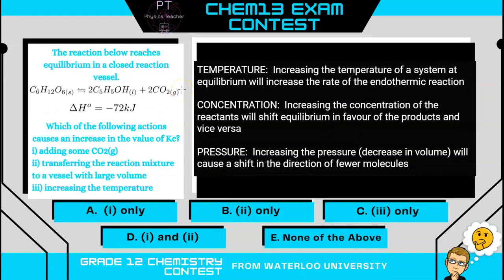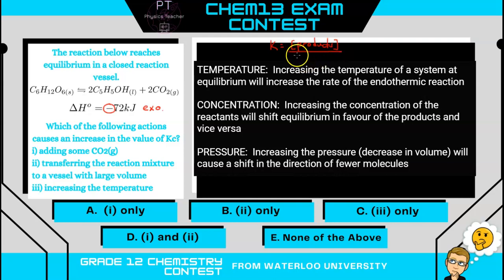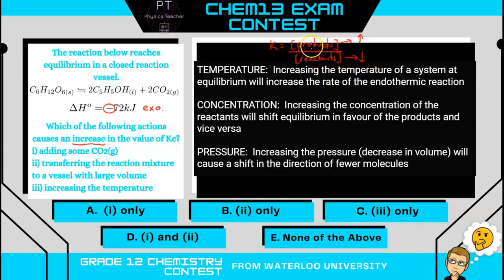In this question, the reaction below reaches equilibrium in a closed reaction vessel and again our enthalpy change is negative, so we have an exothermic reaction. Which of the following actions causes an increase in the value of the equilibrium constant? Our equilibrium constant Kc is equal to the product of the concentrations of the products divided by the product of the concentrations of the reactants. So if we want to increase Kc, we want to increase the products and decrease the reactants — that ratio would be larger. This means we want the reaction to go from left to right. That's a tricky way of asking this question; it doesn't seem like a Le Chatelier's problem at first, but it is.